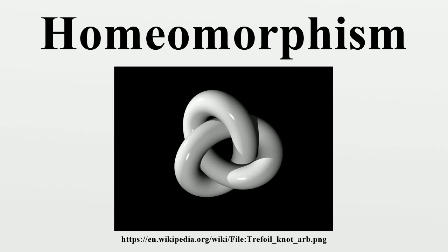A homeomorphism is simultaneously an open mapping and a closed mapping; that is, it maps open sets to open sets and closed sets to closed sets. Every self-homeomorphism on the boundary can be extended to a self-homeomorphism of the whole disc. In formal discussion, the intuitive criterion of stretching, bending, cutting, and gluing back together takes a certain amount of practice to apply correctly. It may not be obvious that deforming a line segment to a point is impermissible, and it is thus important to realize that it is the formal definition given above that counts.